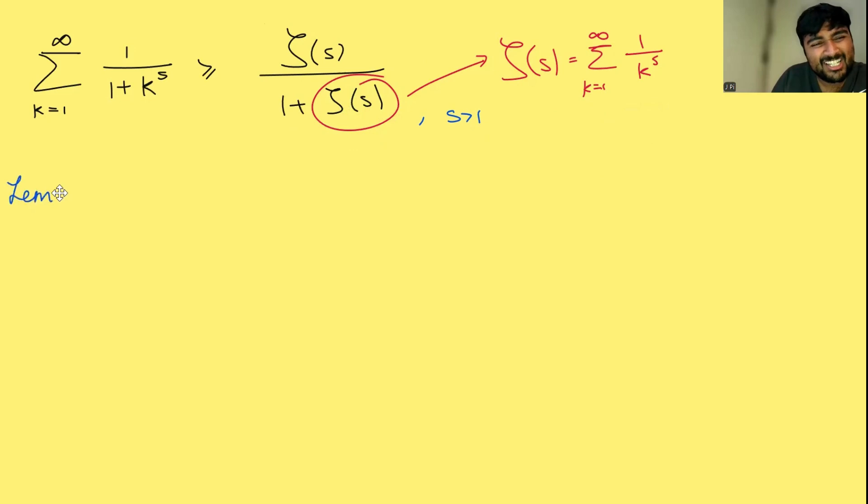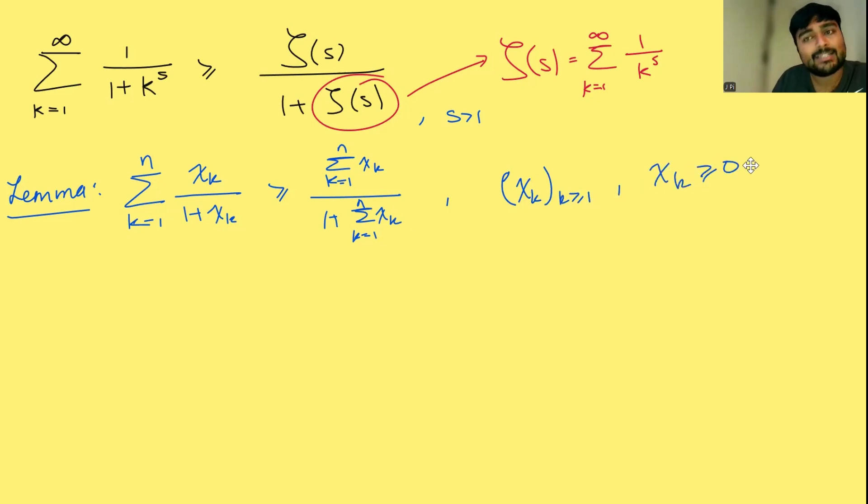The first thing I'm going to do is prove a generalized version of this. I call it a lemma, but actually it's the bulk of the work here. What I'm going to prove is that the sum from k equals 1 to n of xk over 1 plus xk is at least the sum from k equals 1 to n of xk all over 1 plus the sum from k equals 1 to n of xk, where xk is a sequence of non-negative real numbers.